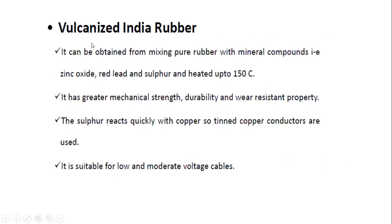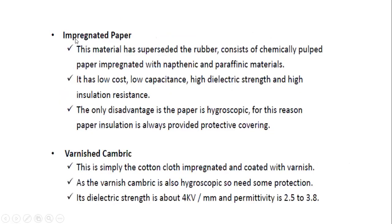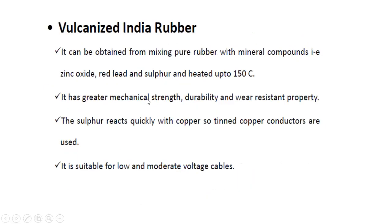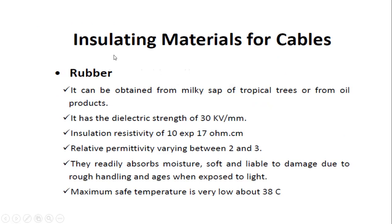The insulating materials for cables are: first, rubber; next, vulcanized Indian rubber; next, impregnated paper; next, varnish cambric; next, polyvinyl chloride; and cross-linked polyethylene. These are the various materials for giving the insulation of cables, and each and every insulating material has different properties.